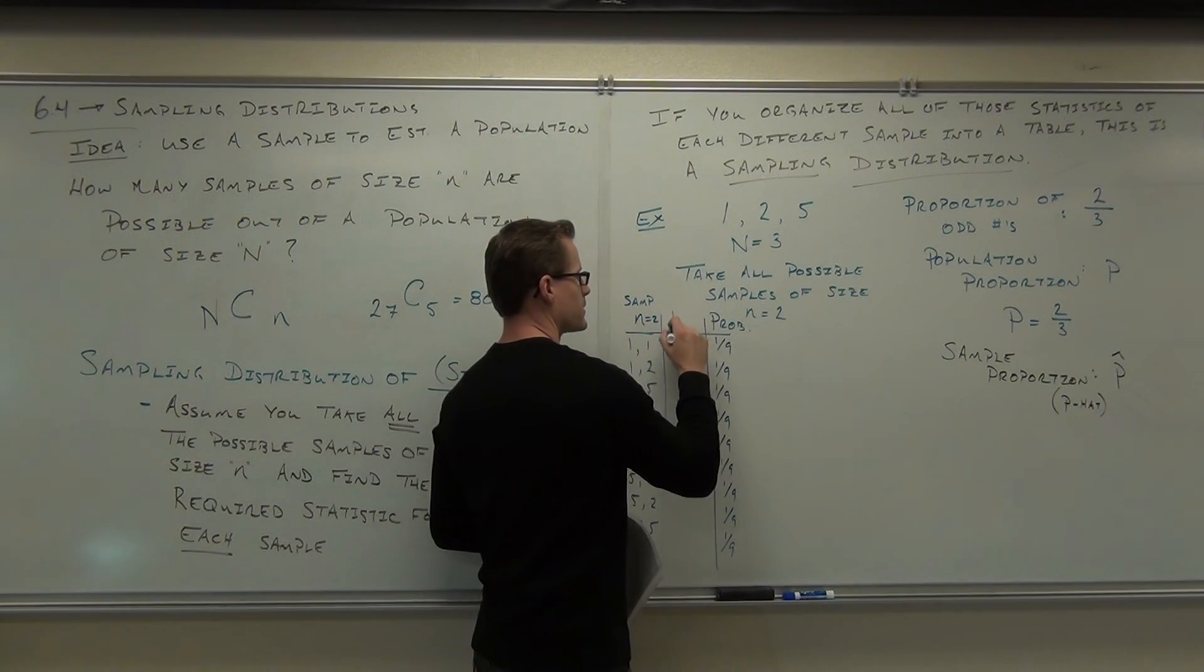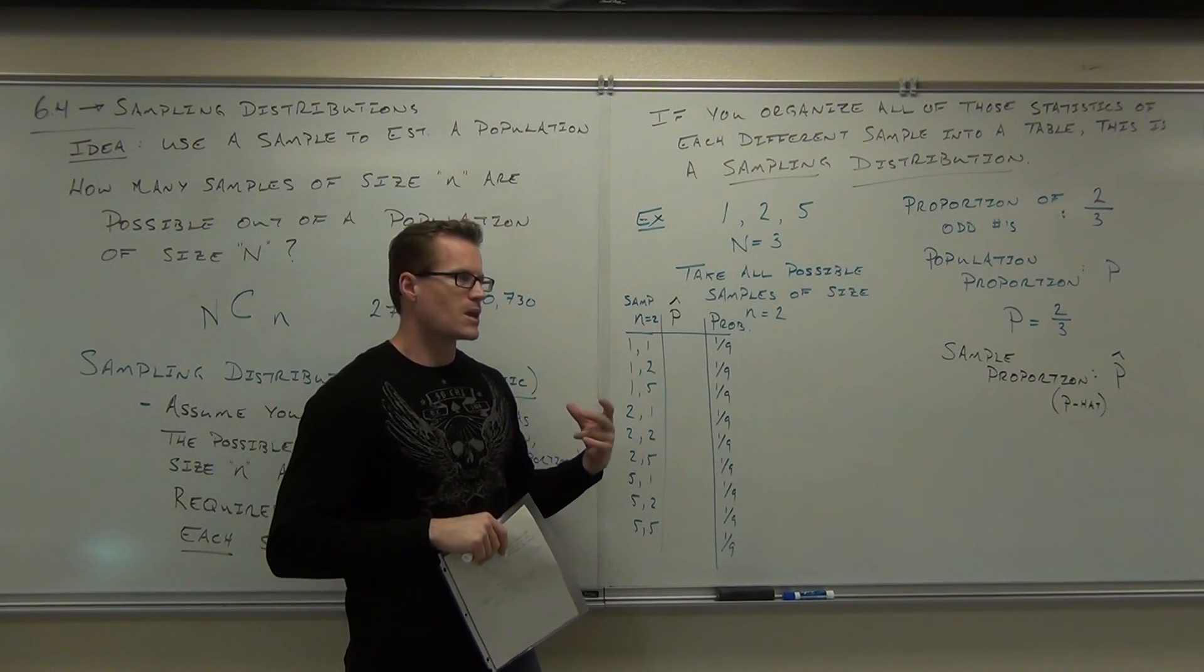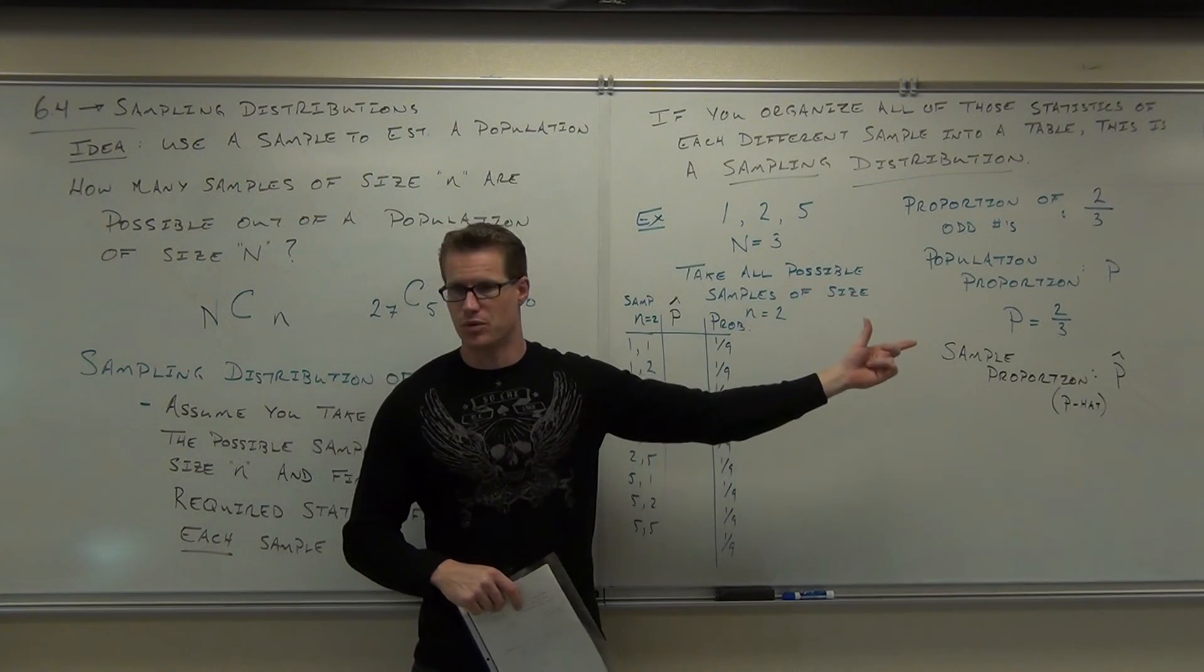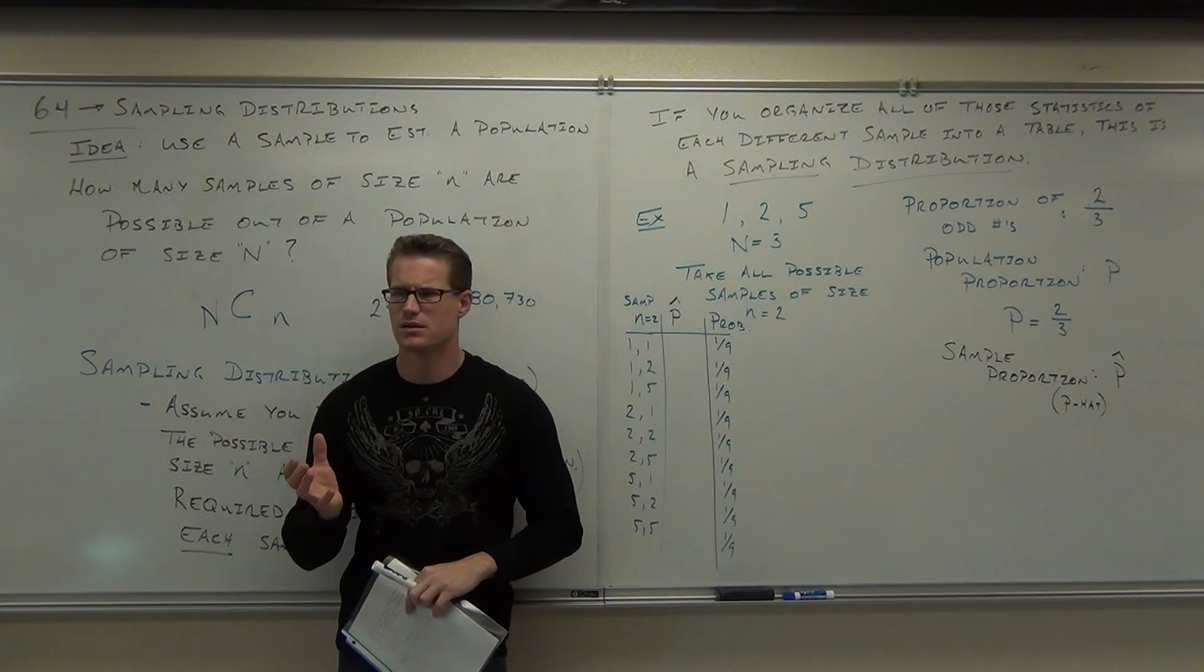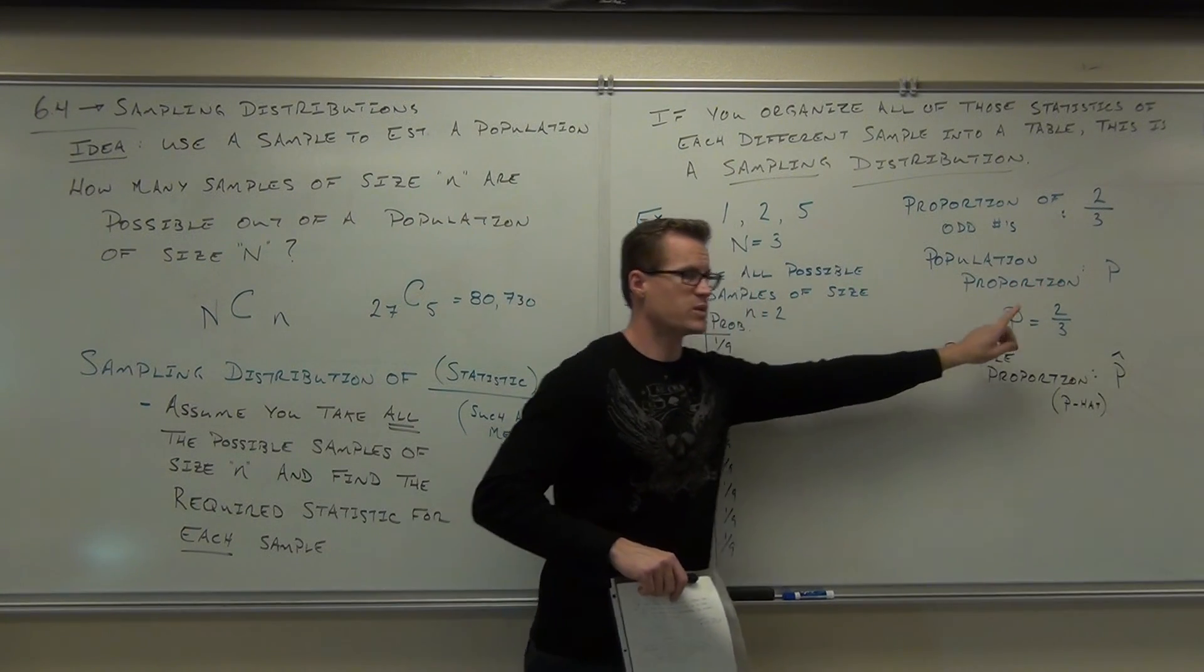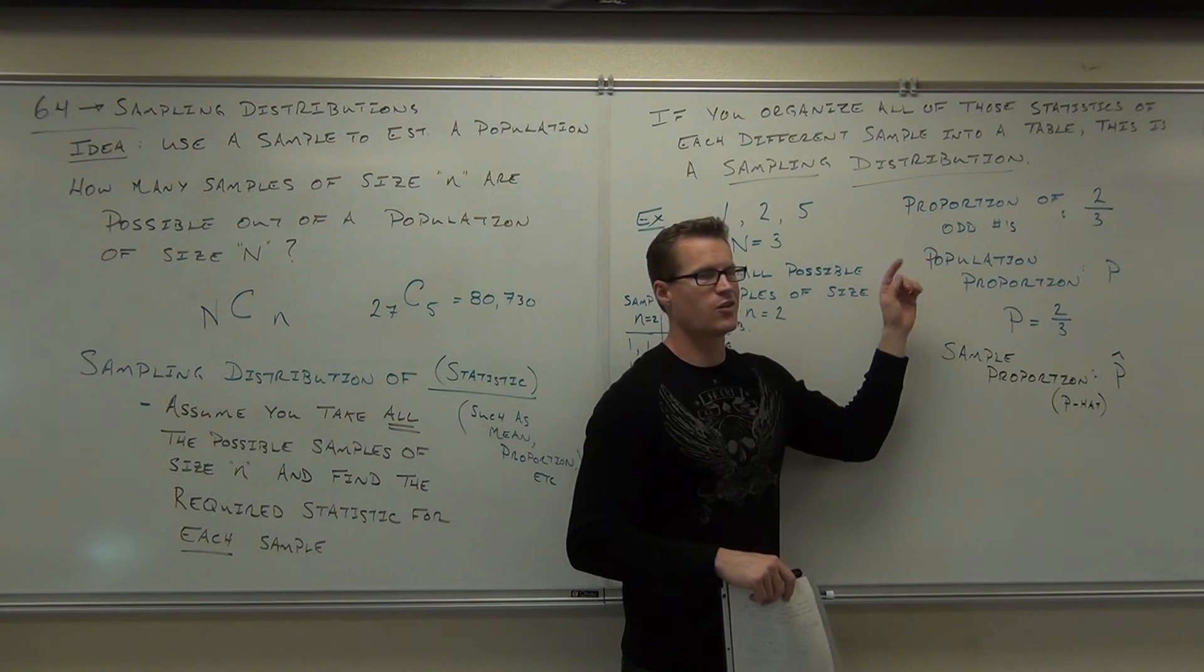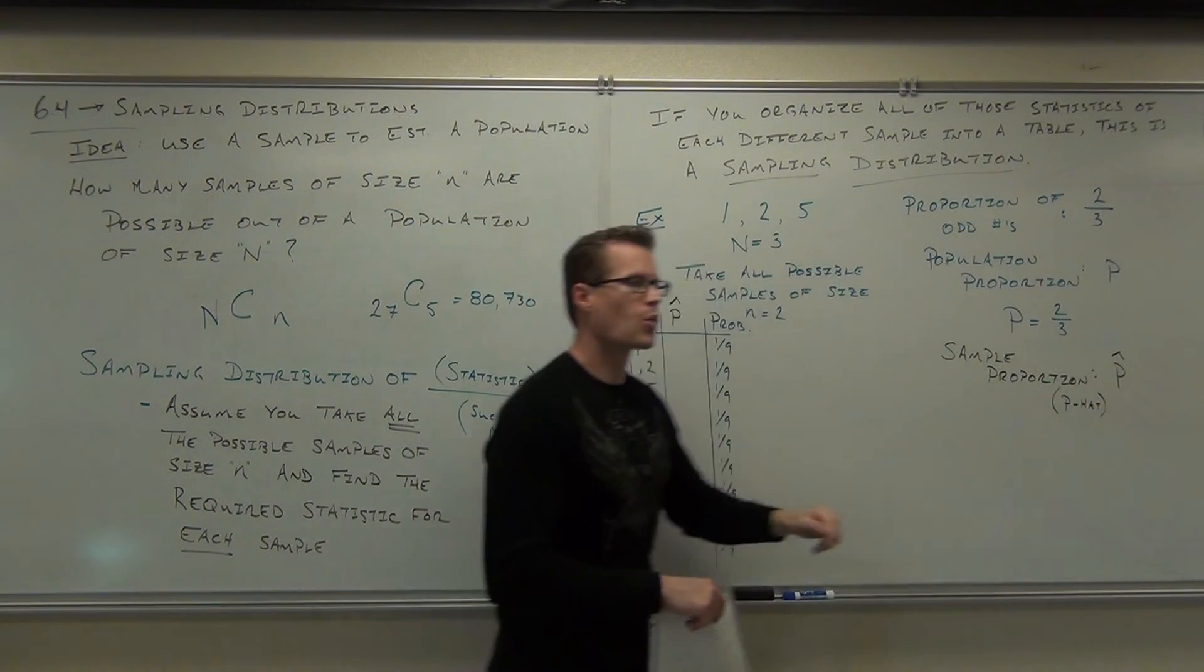Are you okay that all these probabilities are one-ninth? We also want to find out the p hat. We're going to learn something right now that's going to tell us a relationship between p hat and p, our sample proportions and our population proportion. Two thirds of these were odd numbers. We're going to go down the list right here and figure out the sample proportion of odd numbers for each sample.